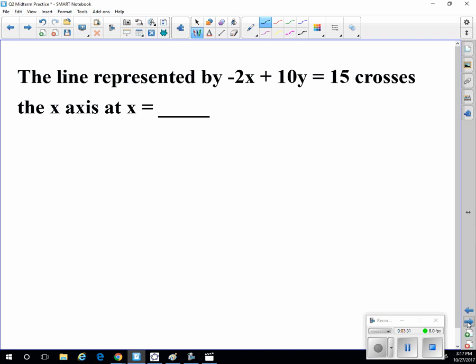The line, represented by negative 2x plus 10y equals 15, crosses the x-axis at x equals what? Well, if you're on the x-axis, y is equal to 0. So let's just replace y with a 0.